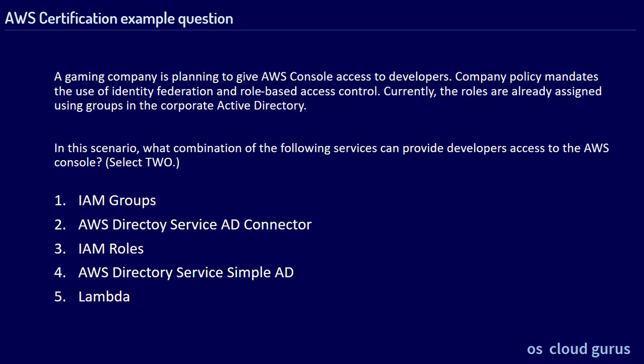Next one. Please read the question and pause the video for a second. We have five possible answers and two correct answers: AWS Directory Service AD Connector and IAM roles. Those were the first three examples of IAM questions.